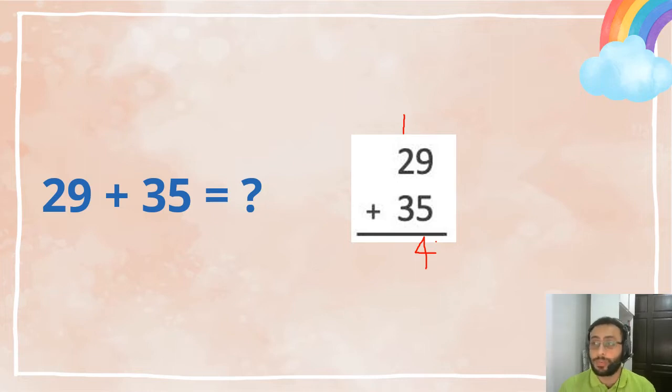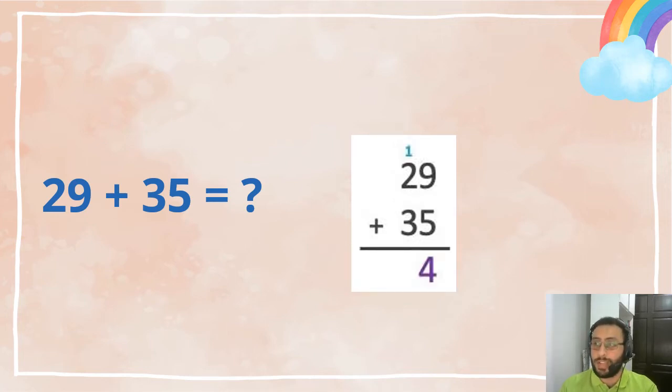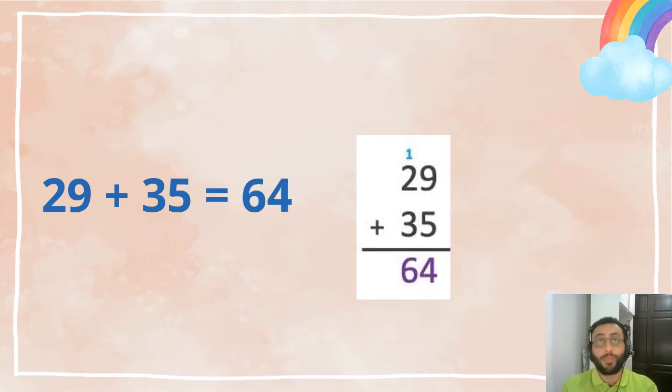Now 1 plus 2 equals 3, 3 plus 3 equals 6. So the answer is 64. Let's see how we did it. Yes, we did this already, and yes, we did this already too. So the answer is 64.